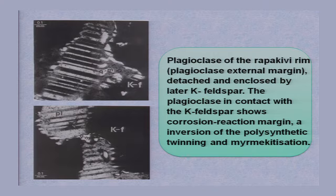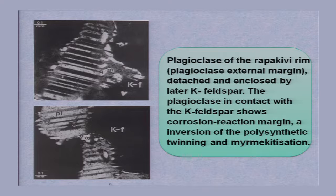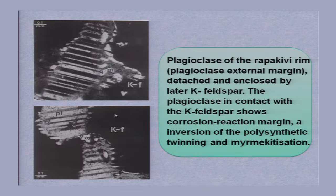I am citing how different varieties of Rapakivi textures are present in the rock. This is the plagioclase of the Rapakivi rim — see the external margin here. This entire crystal is detached from the main crystal and enclosed by K-feldspar, which is dark-colored potash feldspar or orthoclase. This contact shows corrosion.